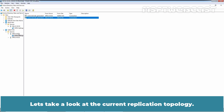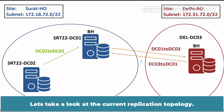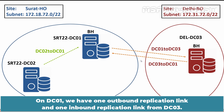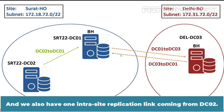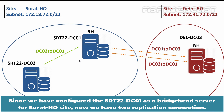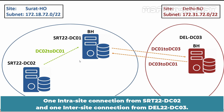Let's take a look at the current replication topology. Now we have an optimized topology. On DC01, we have one outbound replication link, one inbound replication link from DC03, and one intrasite replication link from DC02. Since we configured SRT22-DC01 as a bridgehead server for Surat HO site, we now have two replication connections: one intrasite connection from SRT22-DC02 and one intersite connection from DEL22-DC03.